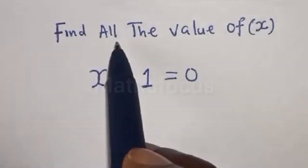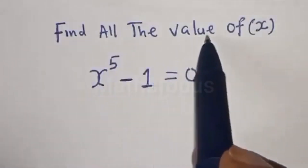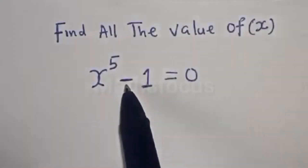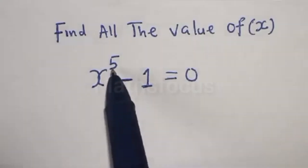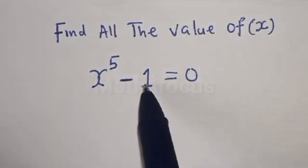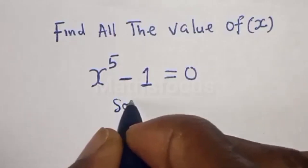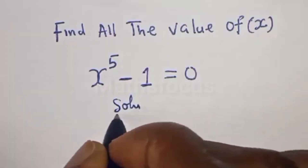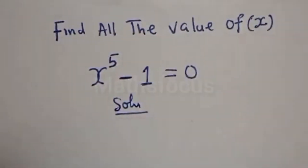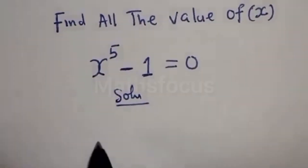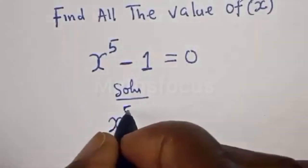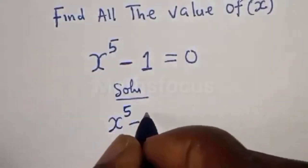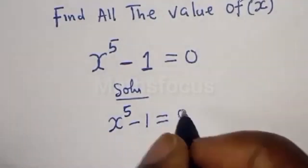Hello, this class wants to find all the values of x from this given equation x raised to the power 5 minus 1 is equal to 0. We have the given equation x to the power of 5 minus 1 is equal to 0.